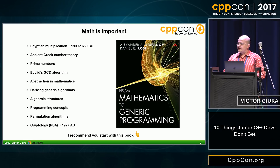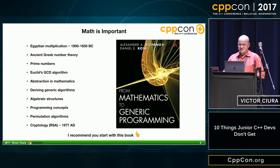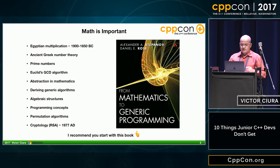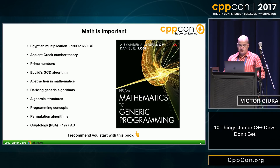They don't get that math is important. I'm giving just an example here. You should start by reading this book — it's still available at the bookstore outside in the hallway. This book is about a story and it follows a very ancient algorithm from about 2000 BC to current day. I think it's a very inspirational book and every young C++ developer should read it.